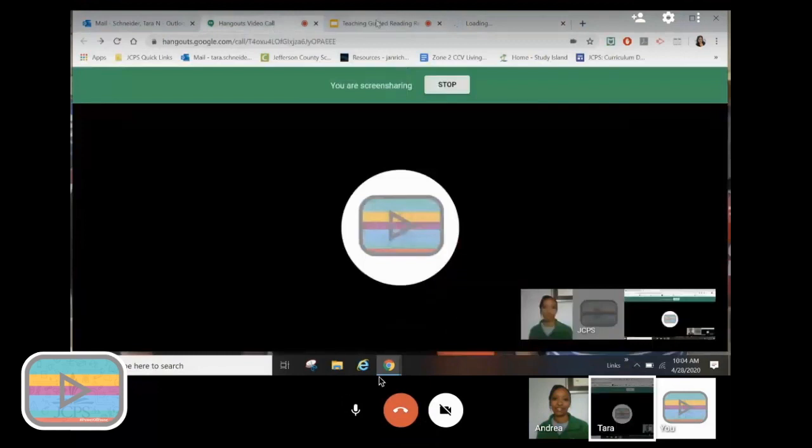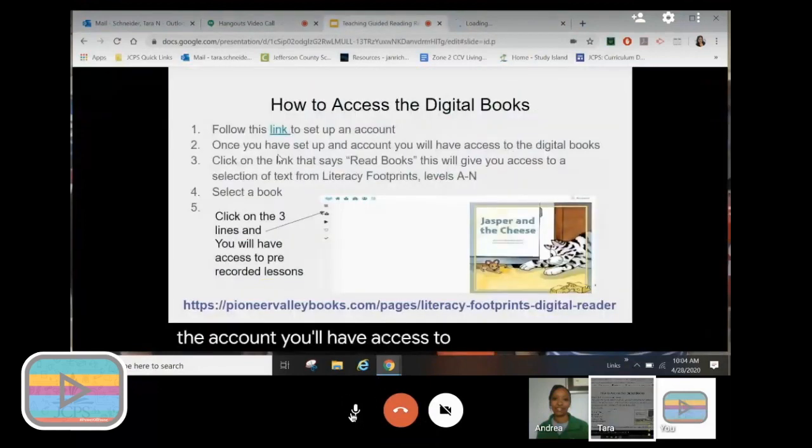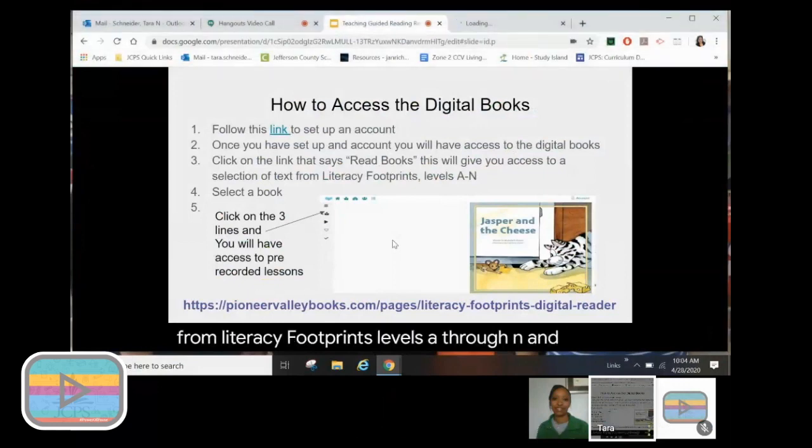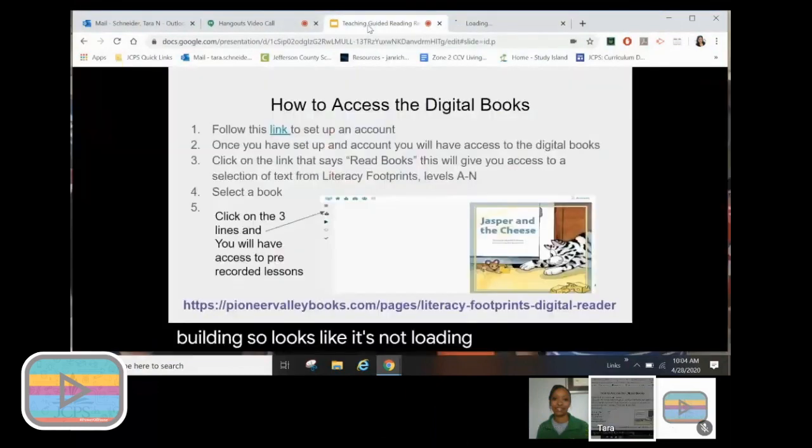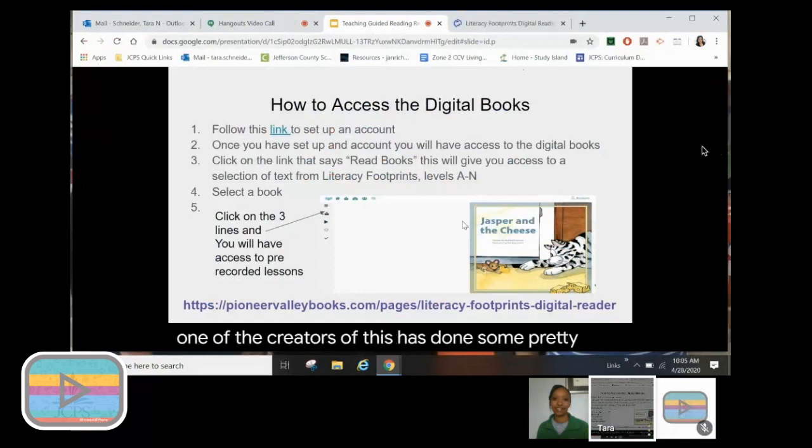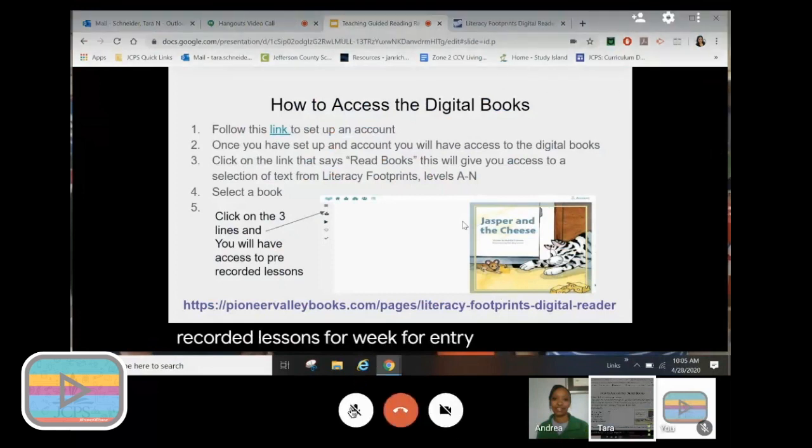Once you've set up the account, you'll have access to the digital books and you're going to click on the link that says read books. It'll give you access to a selection of texts from literacy footprints, levels A through N. And actually now they have levels A through Q. The last I checked, and it keeps on going and going and building. You'll see the three lines over here, you click on there and there's possibly a Michelle, who's one of the creators of this, has done some pre-recorded lessons for book introduction, for word work, and for writing. You'll have access to that. You also have access to the book.